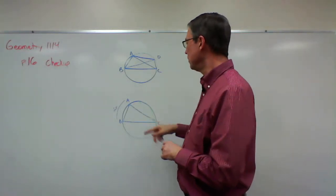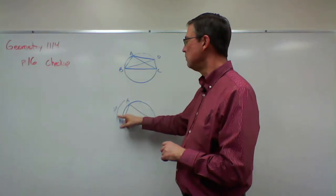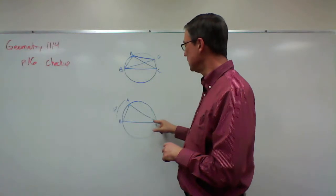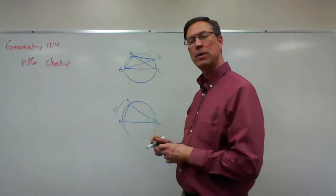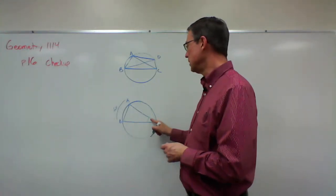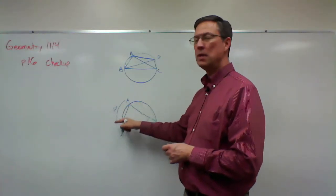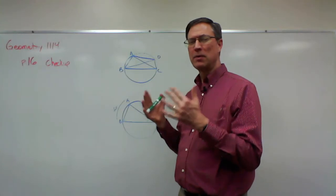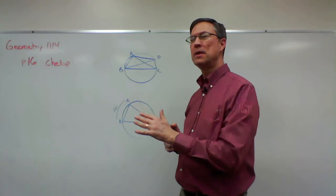Now let's talk about if this arc right here, arc from A to B, is 65 degrees. How many degrees would angle C be, right here? Remember we talked about that in the previous video. This is one of your corollaries: this angle is going to be exactly half of the intercepted arc. We need to memorize some of these and be able to use them throughout the pace, on the self test, the pace test.